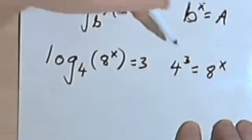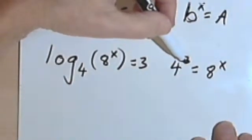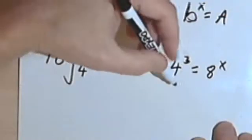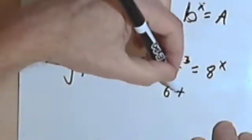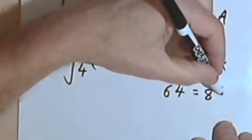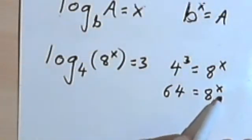Okay, so what is 4 to the third power? Well, 4 squared is 16, and 4 times 16 is 64. So 64 equals 8 raised to some power, raised to the x.